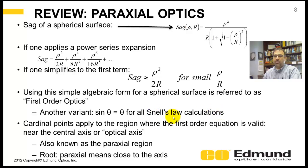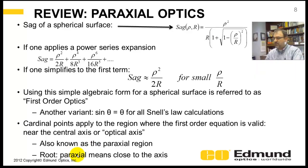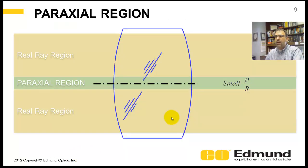Cardinal points apply to this region, and we call it the paraxial region, very close to the optical axis. Medical practitioners like to use the term paraxial meaning close to the axis, close to the body.